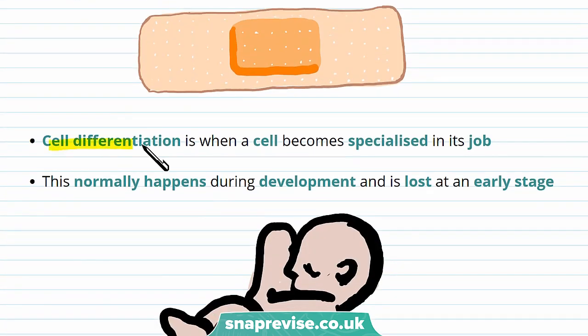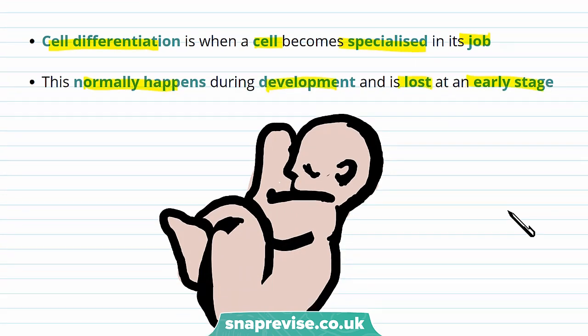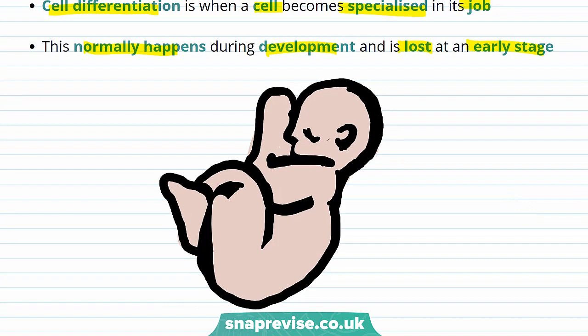Cell differentiation is when a cell becomes specialised in its job. Cell differentiation normally happens during development and this ability is lost at an early stage. In embryos, embryonic stem cells can differentiate to produce all types of cells. However, in adult stem cells, they're restricted to differentiate into only a few cell types.